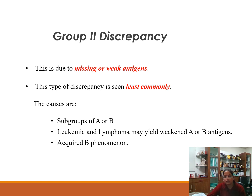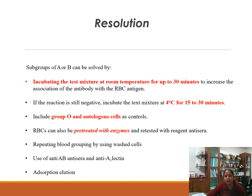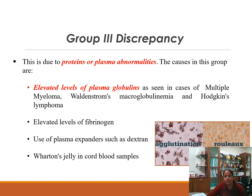Group 2 discrepancy — due to weak or missing antigen — is the least common. It includes subgroups of A or B, or conditions like leukemia and lymphoma which may yield weakened A or B antigen, and acquired phenomena. Resolution: incubate test mixture at room temperature up to 30 minutes; if still negative, test at 4°C for 15–30 minutes; include group O and autologous cells; pre-treat RBCs with enzymes; use anti-AB and anti-A1 lectin; and perform absorption-elution studies.